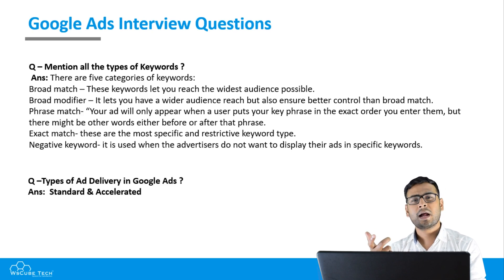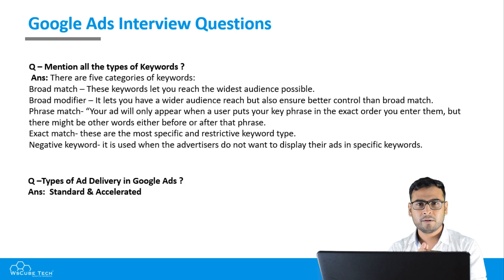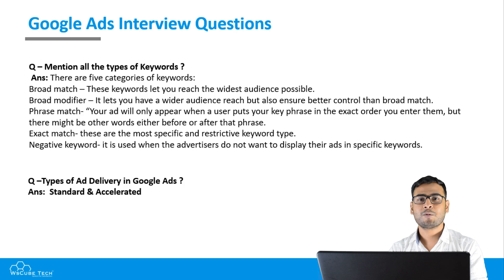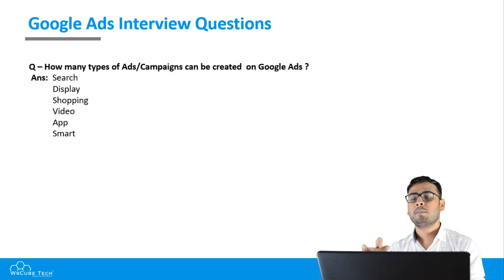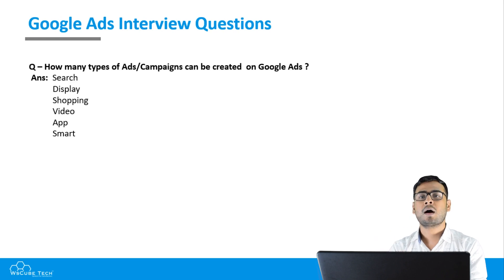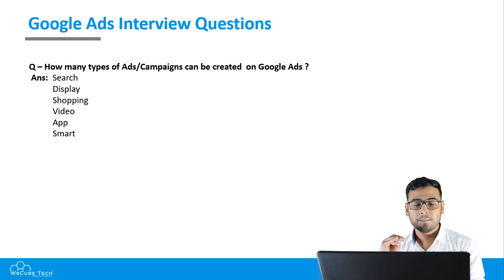The next question is: what are the types of ad delivery in Google Ads? This is a basic general question. There are two types of ad deliveries: standard and accelerated. After that: how many types of ad campaigns can be created on Google Ads? The campaign types include search, display, video, smart, and app campaigns.